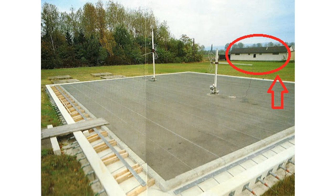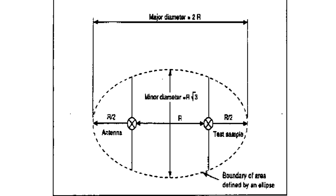The test site should be sufficiently large to permit antenna placing at the specified distance. Ground plane should extend at least one meter beyond the periphery of EUT and the largest measuring antenna, and cover the entire area between the EUT and the antenna. The boundary of the area is defined by an ellipse, as shown in figure.